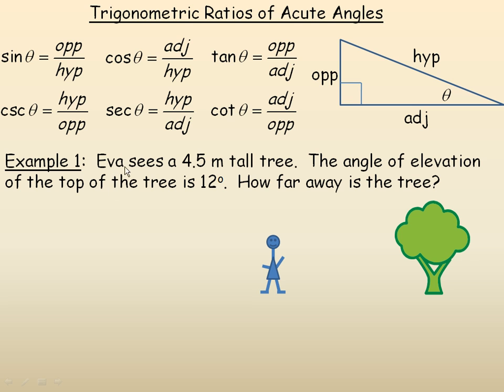In this example, Eva sees a 4.5 meter tall tree. The angle of elevation from her is 12 degrees, and we're asked how far away is the tree. So we need to draw a triangle. The tree is 4.5 meters tall with a right angle, and we're asked to find this side in the triangle.